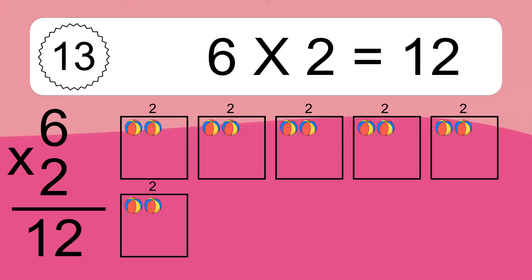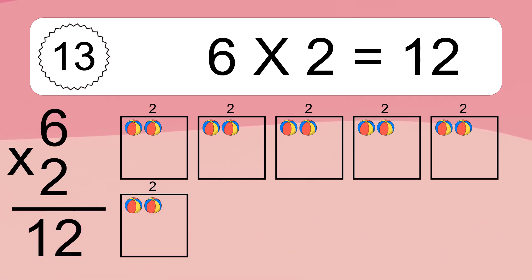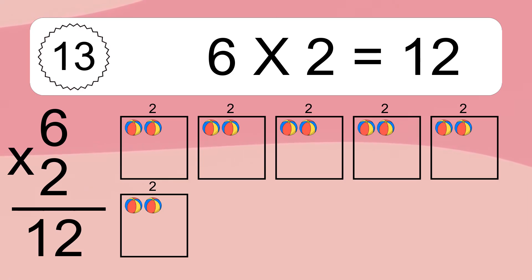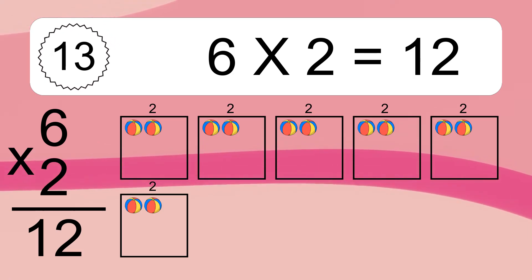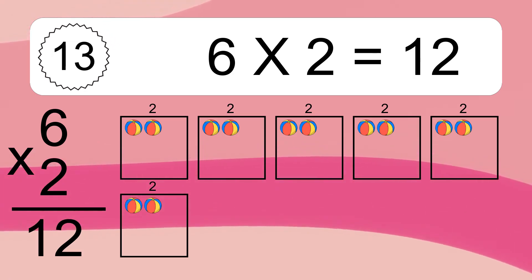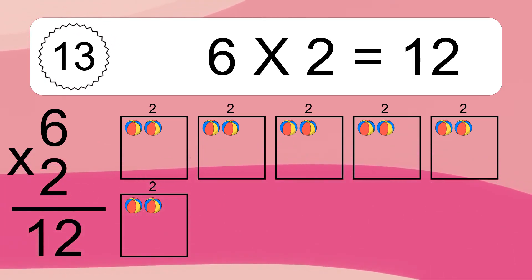We have 6 boxes and each box has 2 colorful balls inside. If you count all the balls in all the boxes together, you will have 6 times 2 balls. This equals 12 balls.